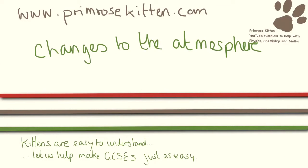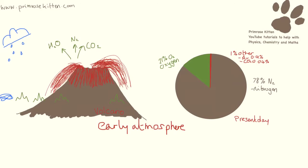The air we breathe hasn't always been the same and it's still changing at the moment. In the beginning, the Earth was mainly made of volcanoes and these had a massive impact on the atmosphere because they spewed out loads of carbon dioxide, loads of water, loads of nitrogen. And this is what the atmosphere was mainly made of, with a bit of ammonia and a bit of methane thrown in. Today's atmosphere is mainly made of nitrogen, about 70%, and 21% of that is oxygen, and 1% is other stuff like argon and carbon dioxide.